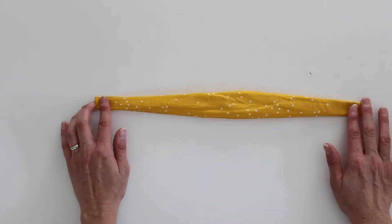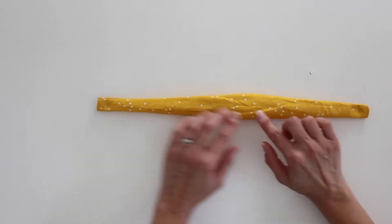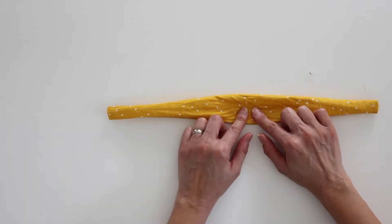Also note that even though I have made this the same fabric on both sides, if you would like to make a reversible headband, you can definitely do different fabrics on each side.